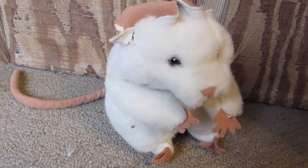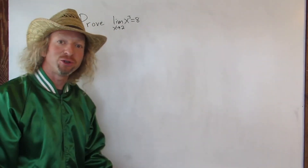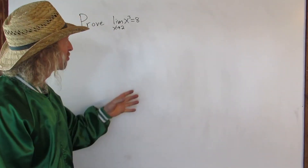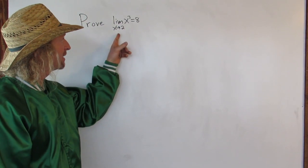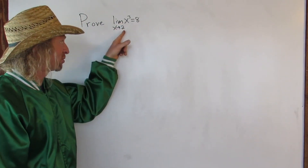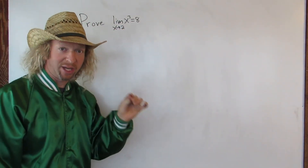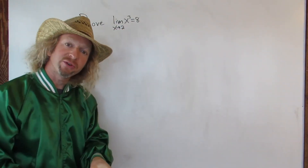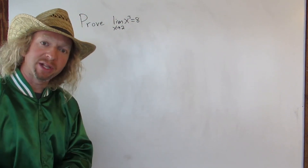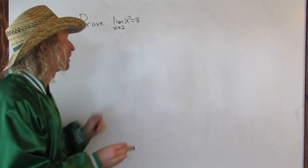I love delta-epsilon proofs. Hey YouTube, in this video we're going to prove that the limit of x cubed as x approaches 2 is equal to 8. So first, let's recall the definition of the limit.